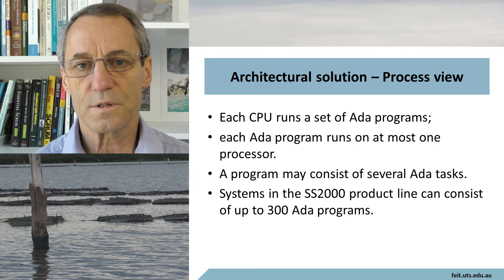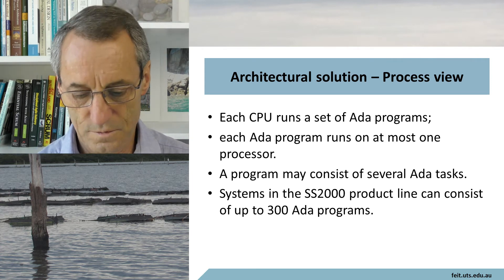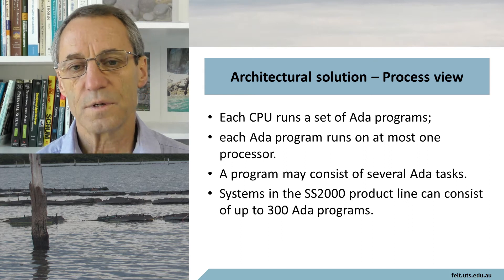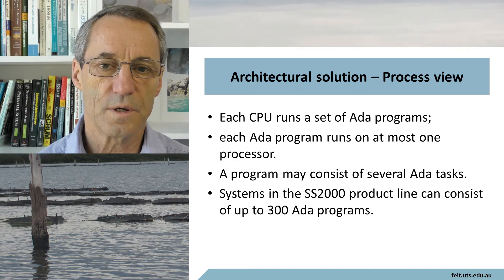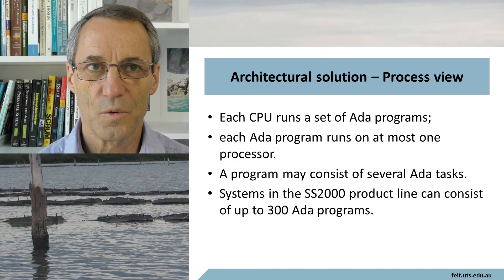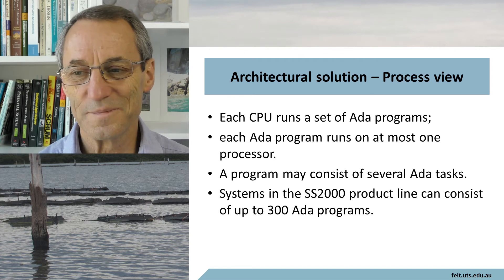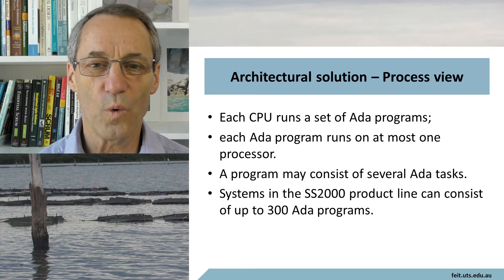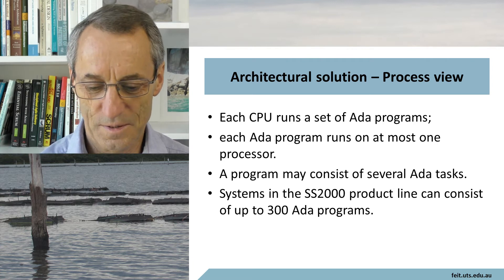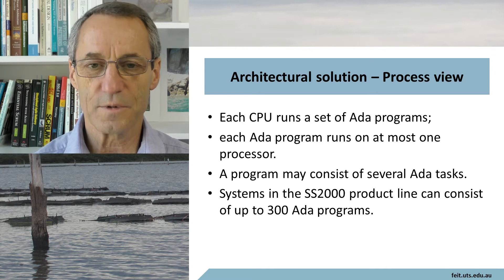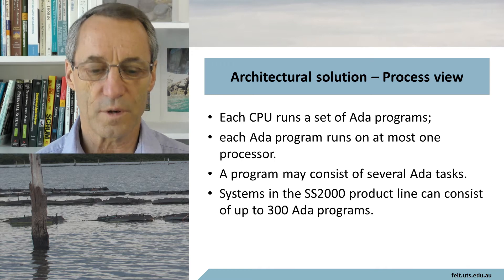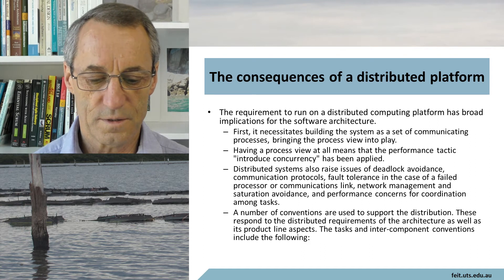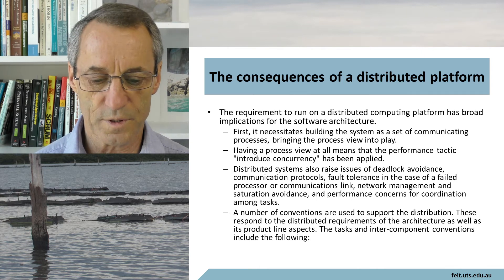For the process view — bearing in mind there are about 70 CPUs — each CPU runs a set of Ada programs. Each Ada program runs on at most one processor, so there are no multi-processor programs. However, multiple copies of programs can run on different processors, and multiple programs can run on one processor. A program may consist of several Ada tasks, and the Ship System 2000 product line can consist of up to 300 Ada programs. This distributed platform necessitated building the system as a set of communicating processes, bringing the process view into play.